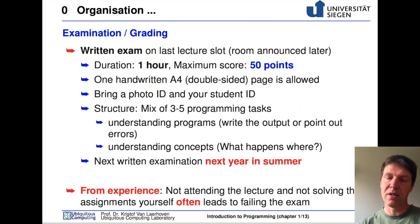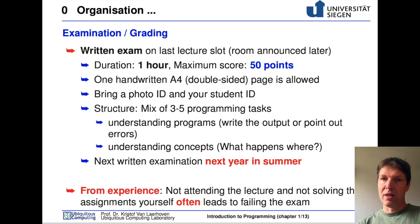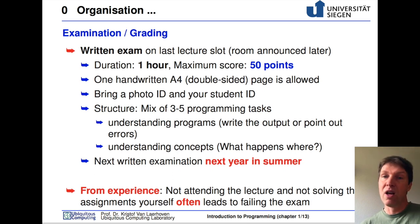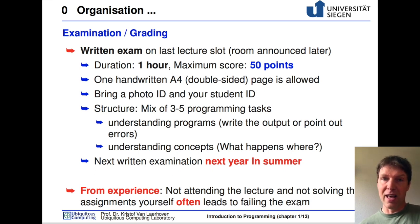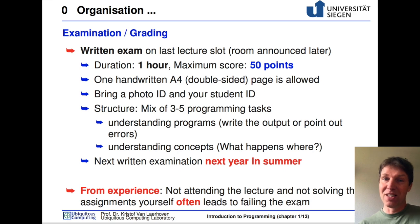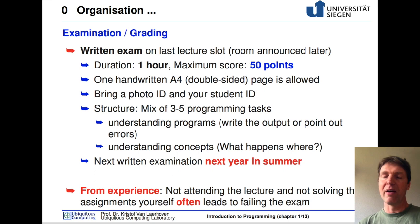At the end of the semester — still during lecture time usually — we will have a written exam that takes one hour, for which you can also get 50 points. If you've been counting: 4 times 10 points, plus 2 times 5 points, plus 1 times 50 points equals 100 points. If you are taking this test at the end of the semester, you can bring one handwritten A4 page that is double-sided with you. So you don't really have to learn lots of things by heart — you can compact the essence onto that one page.